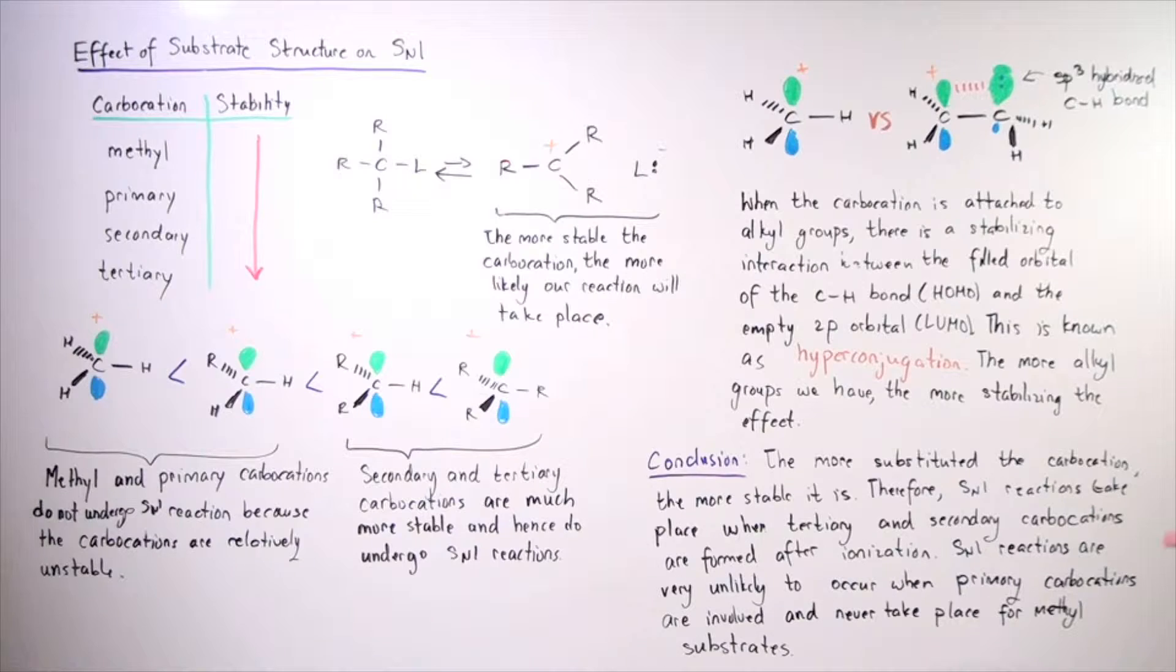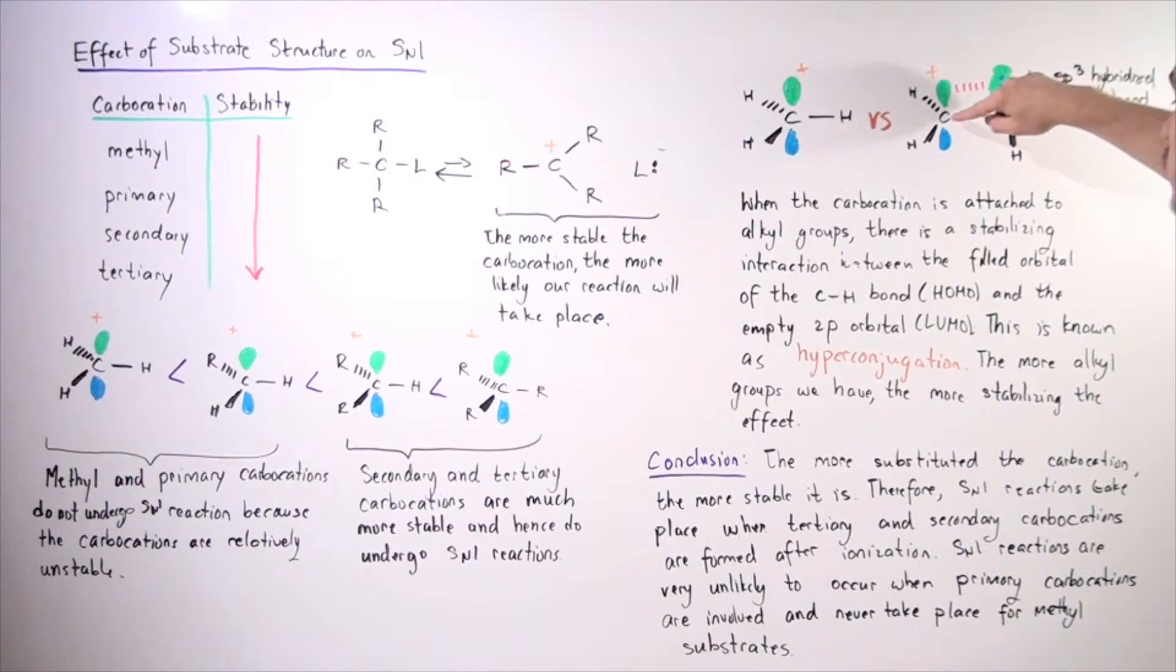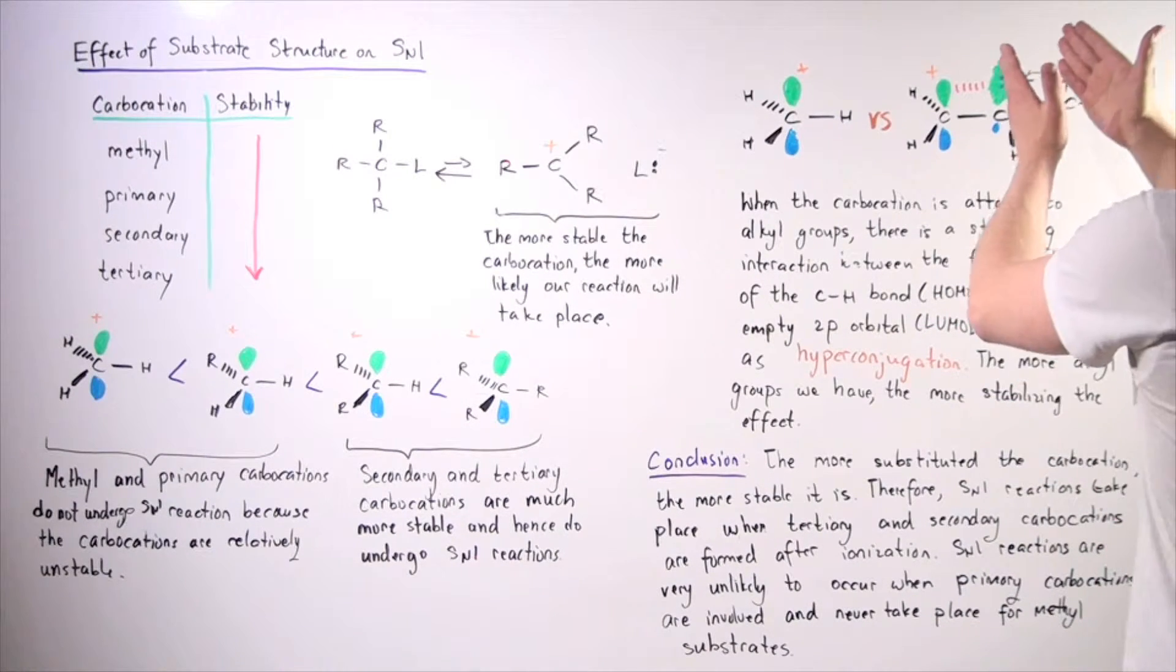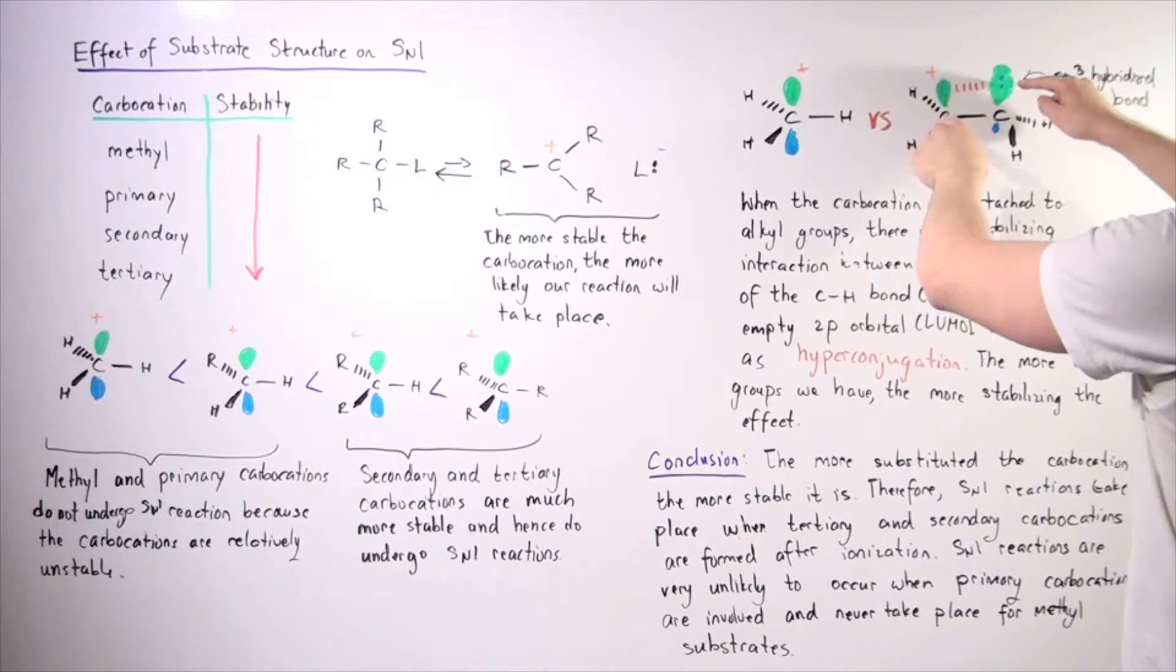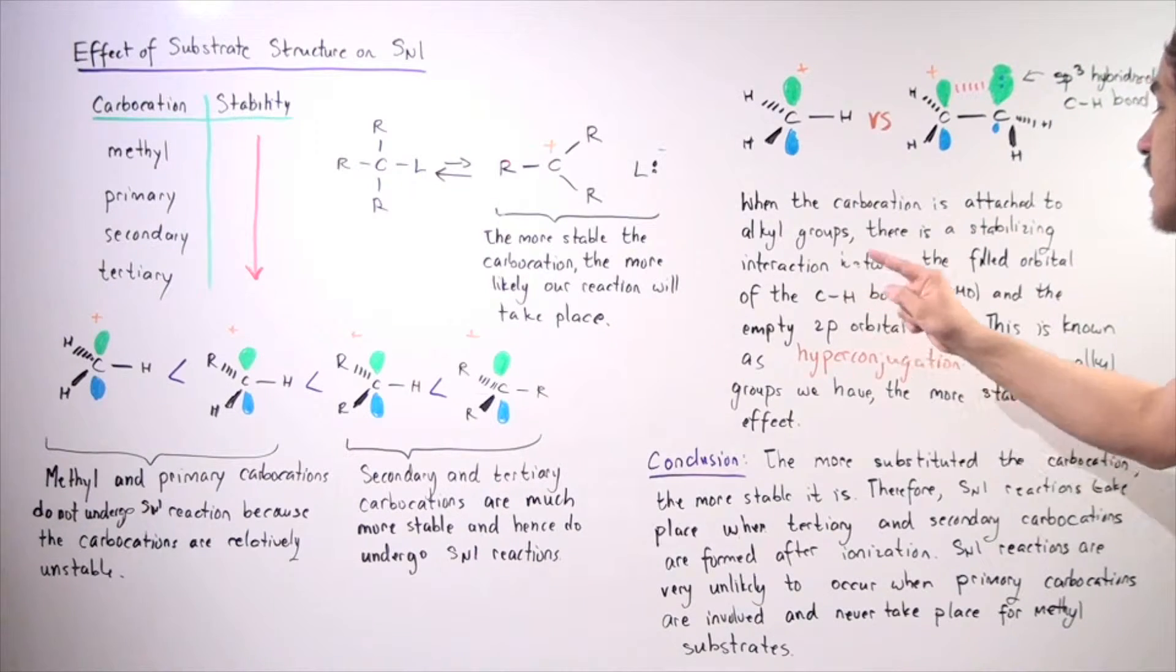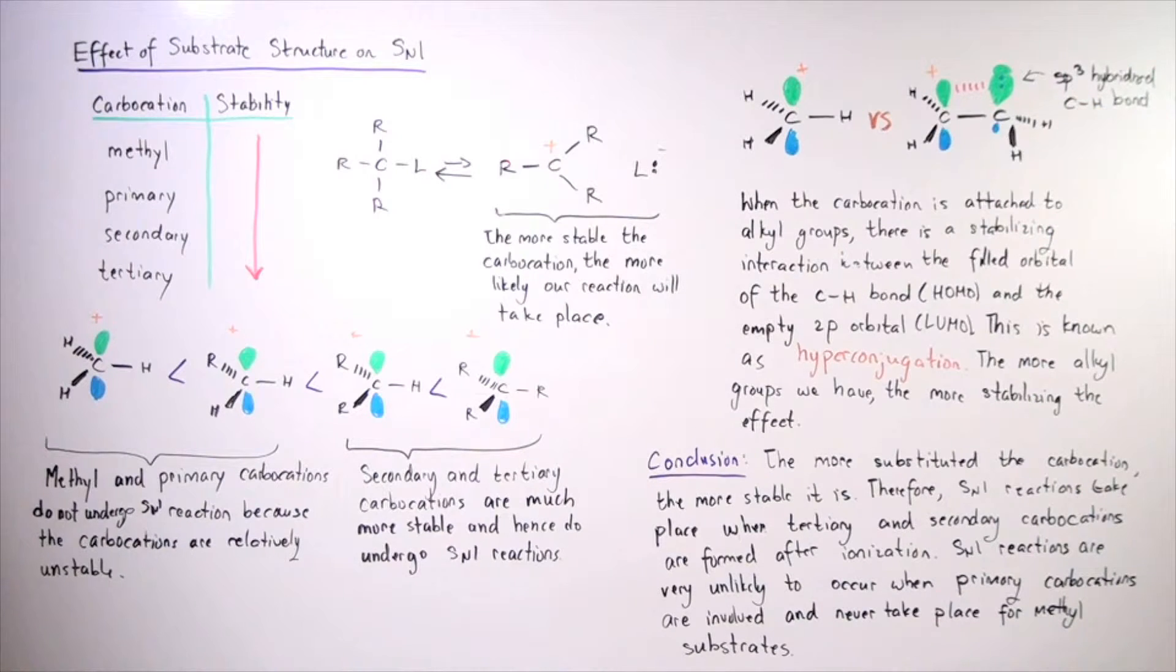which is also known as the HOMO, the highest occupied molecular orbital, and the empty 2p orbital of this carbon, known as the LUMO, lowest unoccupied molecular orbital. So there's this Lewis acid-base interaction between these two orbitals. And this is stabilizing. And this is known as hyperconjugation. So hyperconjugation is a stabilizing effect.